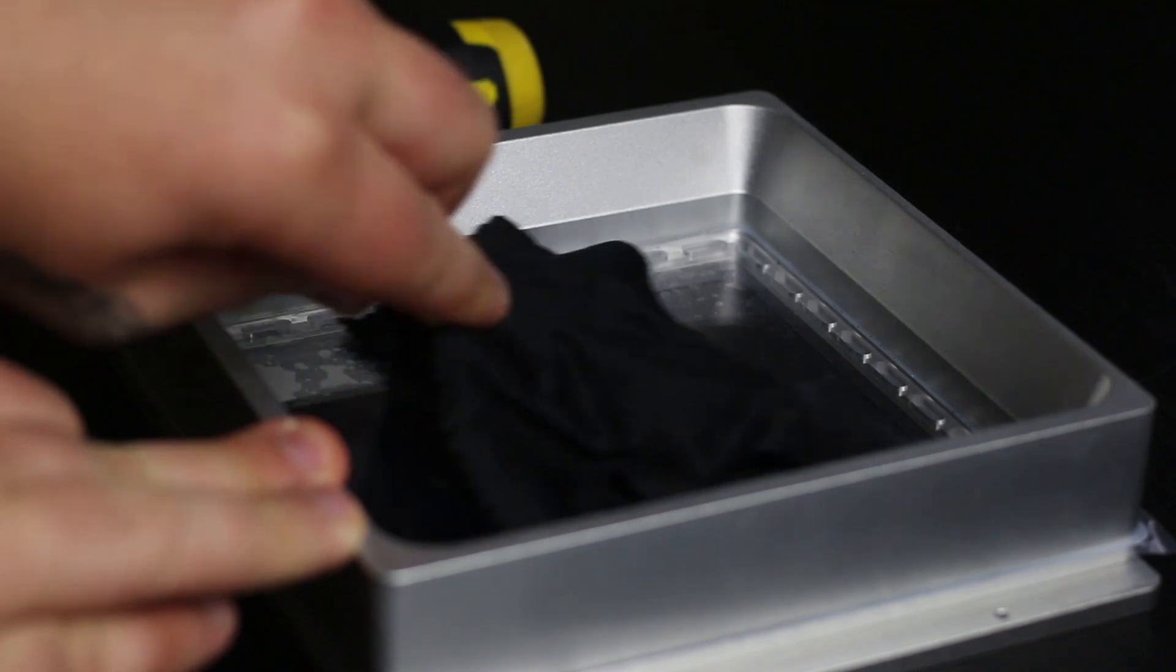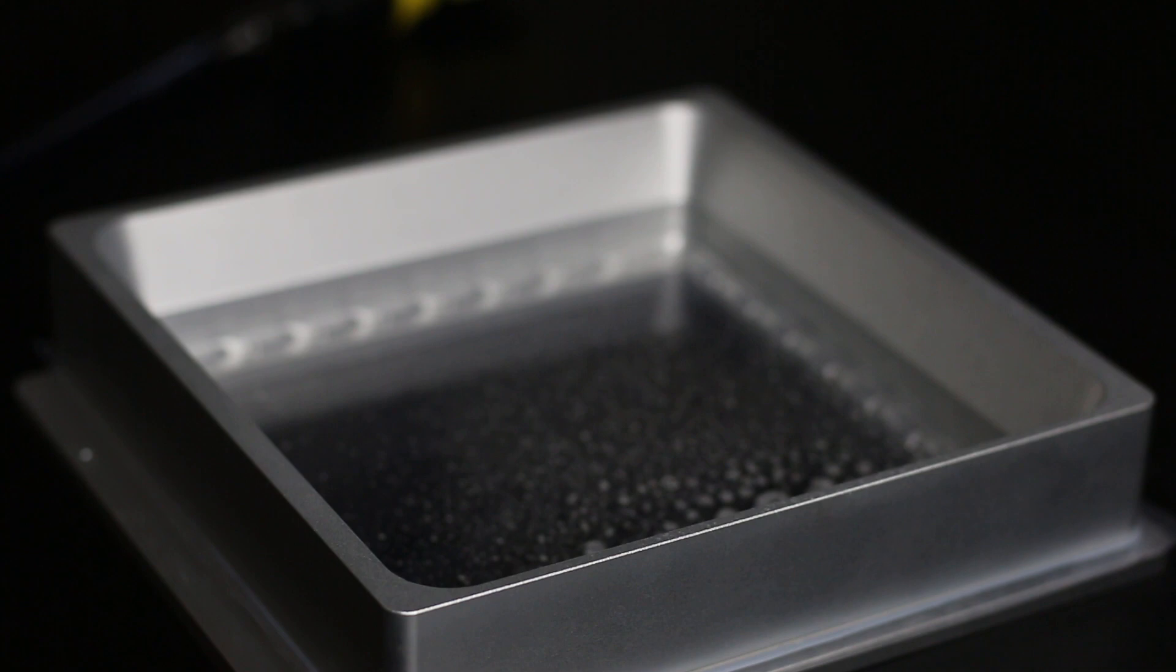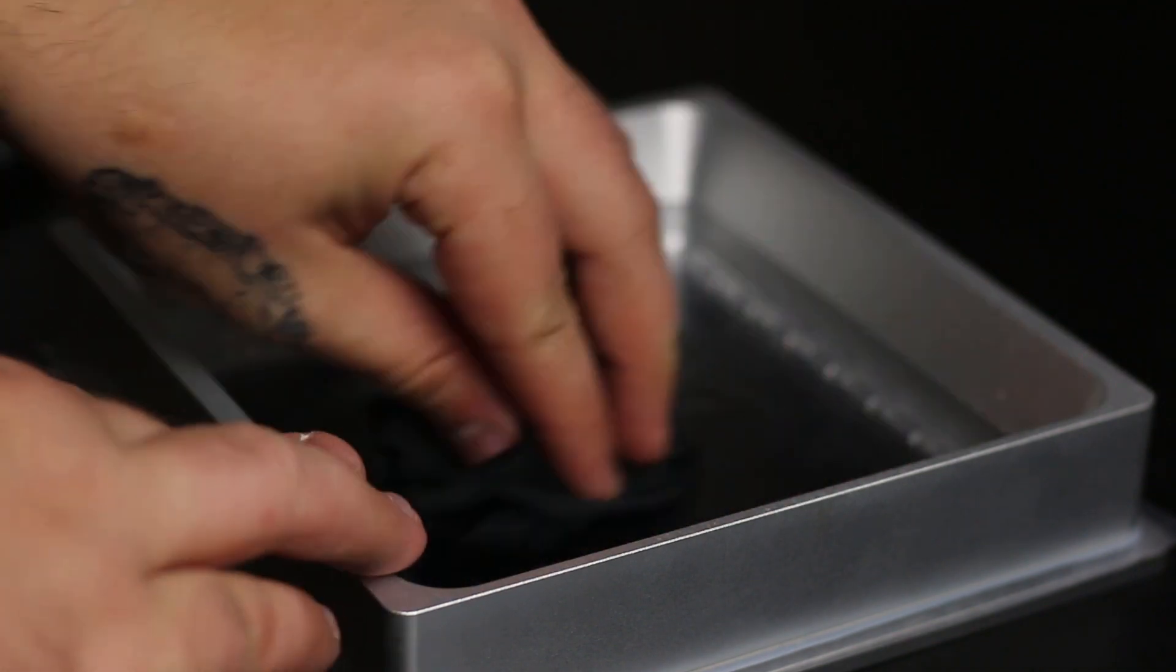Put the cloth over the edge of the scraper and push out all the air bubbles. Once this is complete, you can give it a quick spray of IPA or a window cleaner or anything you like.